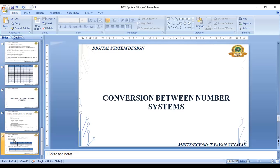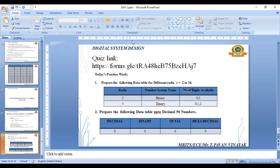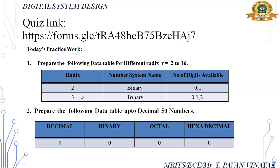Homework: first, prepare a table for radix and number system name — for example, radix 2 is called the binary number system. Do this from radix 2 to 16 and mention the number of digits for each. Second, prepare a data table for decimal numbers 0 to 50, showing each number in decimal, binary, octal, and hexadecimal form.